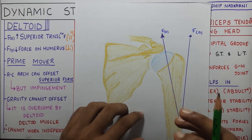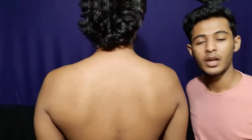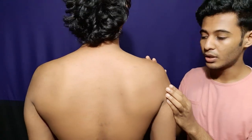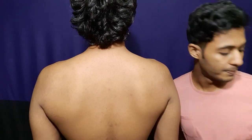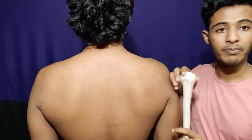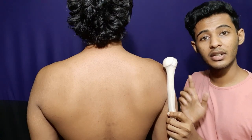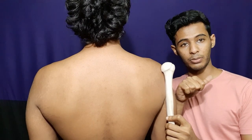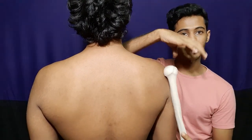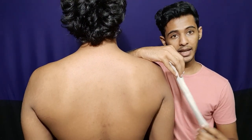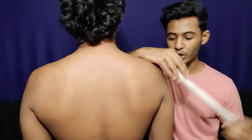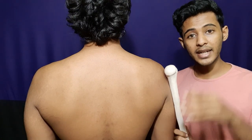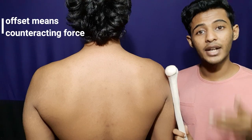Now let's look at these vectors and see what they do at your glenohumeral joint. The deltoid has a posterior part, anterior part, and lateral part. The humerus is being pulled superiorly — there is a very big superior component — and then some slight abduction component outward. So your deltoid basically holds your humerus and superiorly pulls it, producing abduction. Now, that superior component is very large, so we need a force to counteract it.